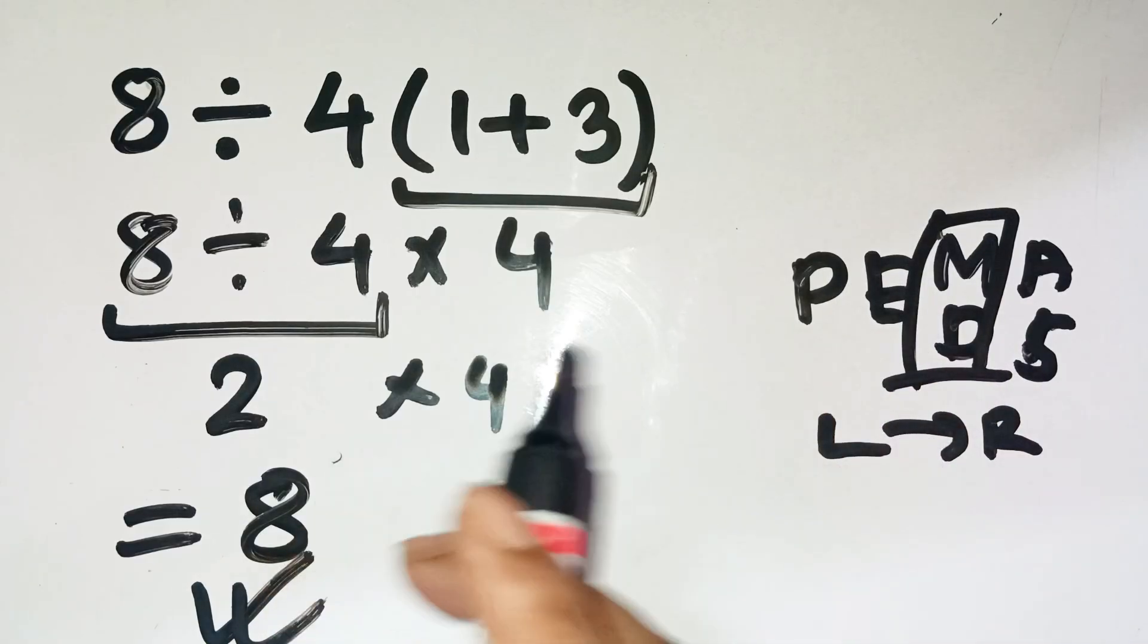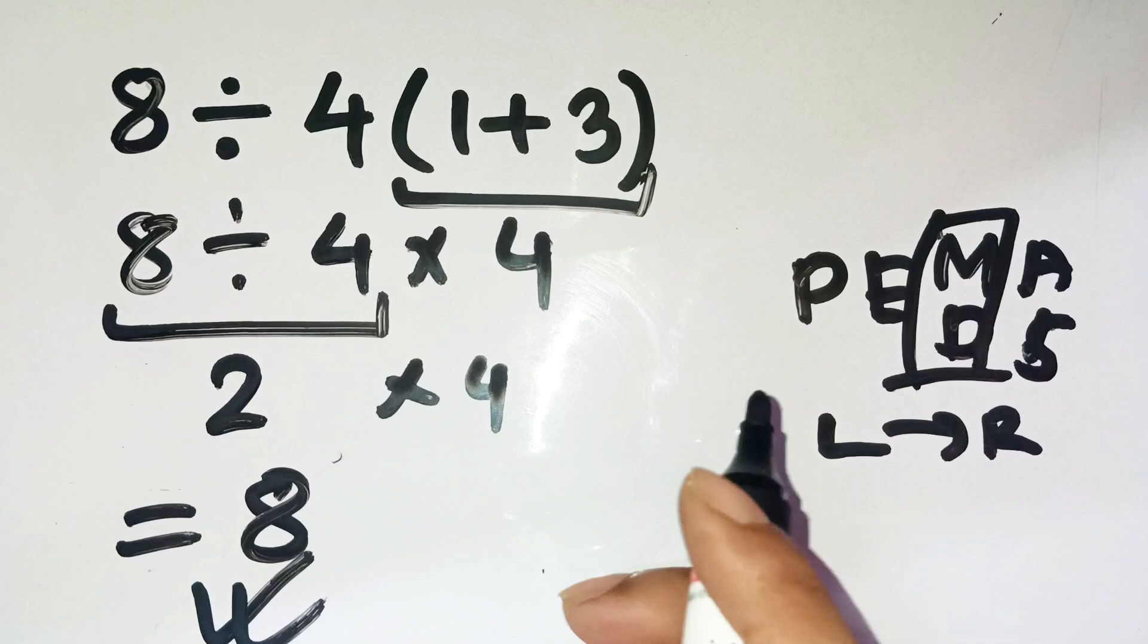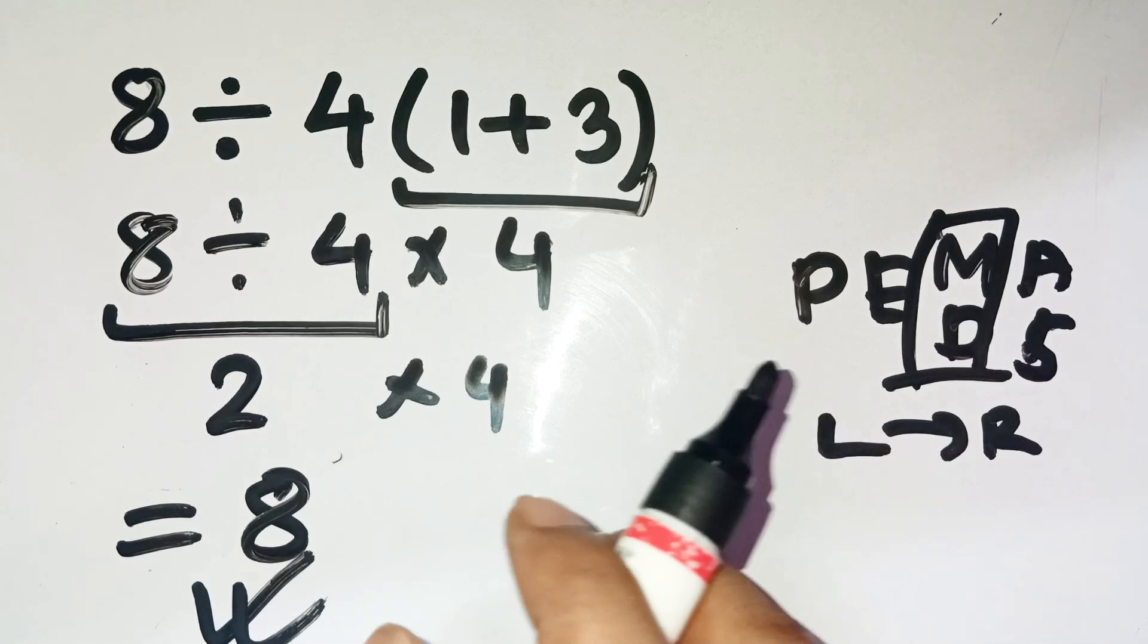But if you first multiplied that 4 by 4 to get 16, you'd be cutting your candies way too small. And that's what happens when you assume it's one half.